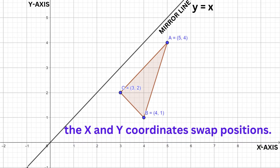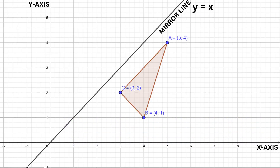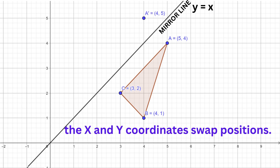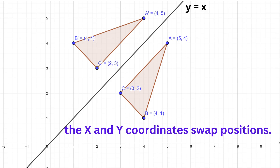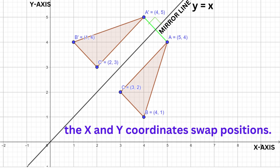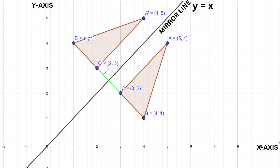For example, reflecting this triangle in the line y equals x: point A will transform to (4, 5), point B will change to (1, 4), while point C changes to (2, 3). If you draw a perpendicular from one point to the line and measure the distance, the reflected point will be the same distance away from the line on the other side. It's the same for all the points and their images.